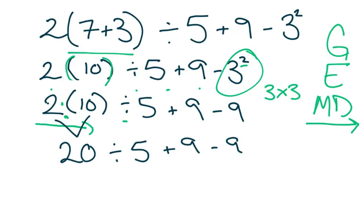I did my multiplying and dividing. Am I ready to move on? Nope, not yet. There's still multiplying and dividing in this problem. So, I'm going to go back and do it again. 20 divided by 5 is 4 plus 9 minus 9. Only after I have done every single multiplication and division step can I move on.